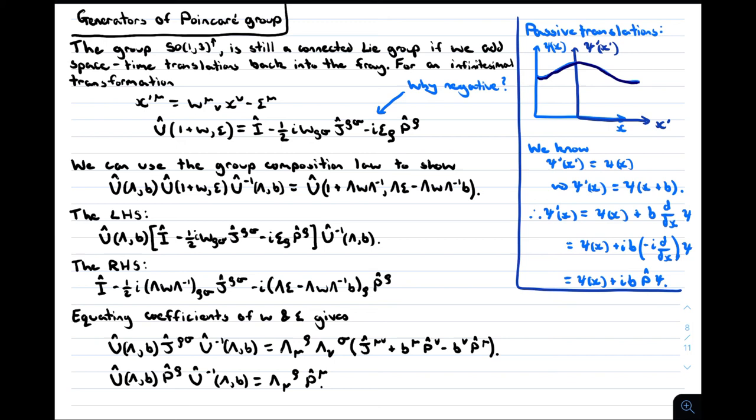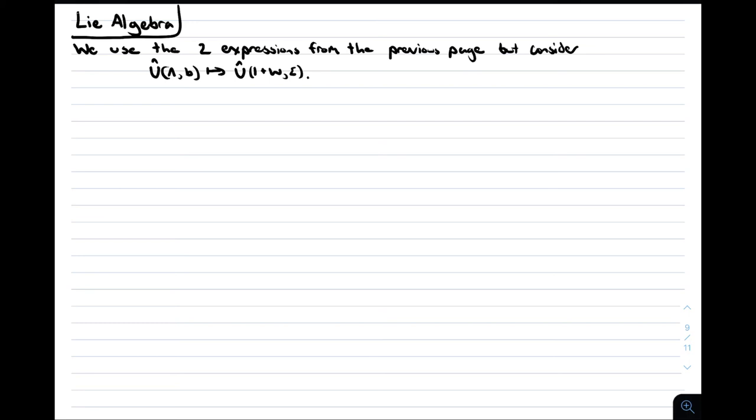The first term is also consistent with our identifications of J as boosts and rotations. Firstly, if there is no translation, it transforms as a rank 2 tensor, but if we have a translation, the extra terms are a quantum mechanical analogue of what leads to the parallel axis theorem in classical mechanics. We can use these two identities to derive the Lie algebra for this group. We make the transformation infinitesimal on both sides of the expression, and equate coefficients as we did before. This gives three relations. The first is the Lie algebra of the proper orthochronus Lorentz group. The second tells us the commutators between boosts and rotations with translations. The third tells us that all four components of four momentum commute.